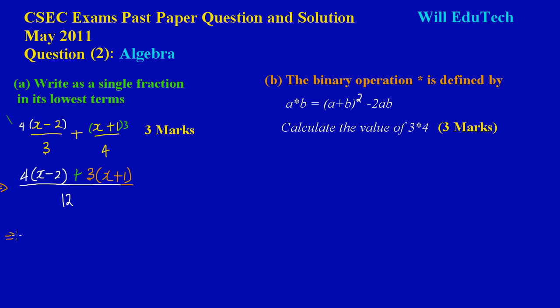So really, this implies that I have 4 times the x, which will give me 4x, and then 4 times negative 2 will give me negative 8. Here I have a positive 3, so positive 3 times x will give me positive 3x, and 3 times 1 will give me plus 3. Now remember that is all over 12.